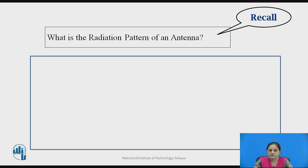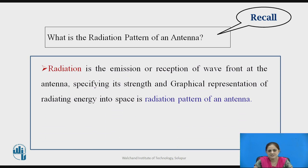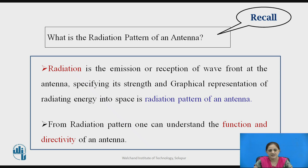Before going to the actual parameters of an antenna, you can pause the video here for 2 seconds and recall what is the radiation pattern of an antenna. Radiation is nothing but the emission or reception of a wave front at the antenna specifying its strength, and the graphical representation of this radiating field into space is the radiation pattern of an antenna — that is, in which direction and with what strength the wave is radiated. From the radiation pattern, one can understand the function and directivity of an antenna.